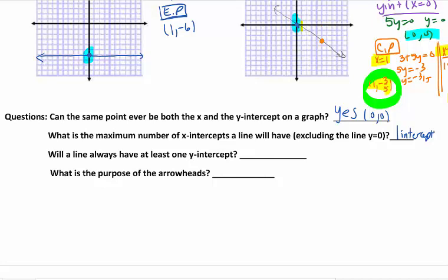Will a line always have at least one y-intercept? This is a tricky one. Your answer should be no. Because if we have our special case, which is an x equals line, so I'm just going to draw you an example here real quick. This does not have a y-intercept. So special cases break that rule.